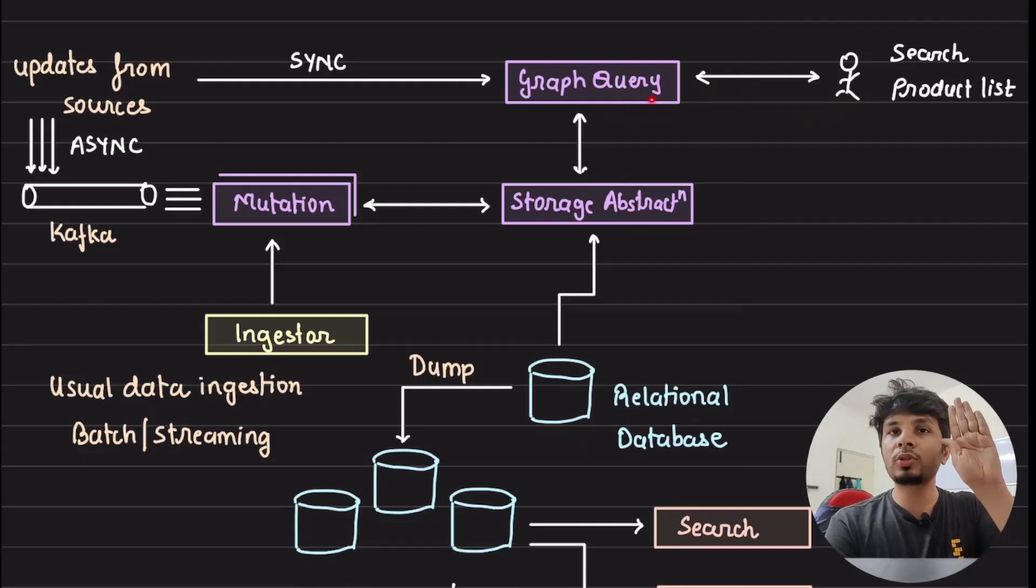Now your graph query layer, your end user, which is maybe your search service, your client search service, planner service, product listing page, all of them, they use graph query layer to fire synchronous queries to this graph.